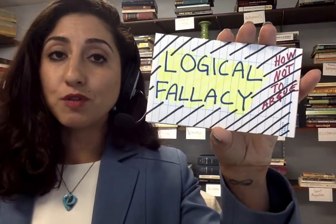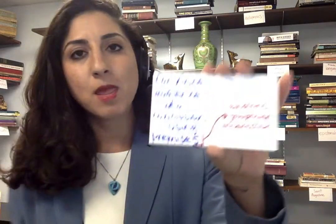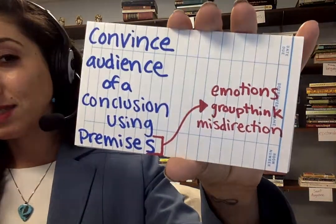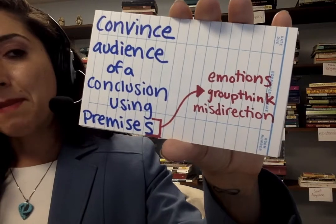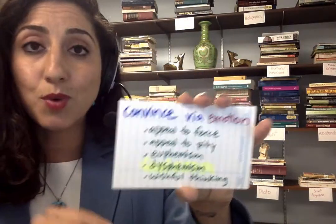Sometimes people will give you arguments that are less than ideal. A less than ideal argument could be a logical fallacy. Logical fallacies are how not to argue, because there's a disconnect between the premises or reasons being offered in favor of a conclusion and the conclusion itself. There are different kinds of logical fallacies. I'm going to talk about three: emotions, groupthink, and misdirection — three kinds you might fall victim to if you don't know what to look out for. We'll cover each one with an example.